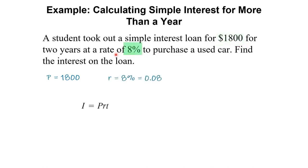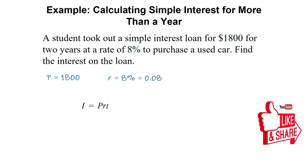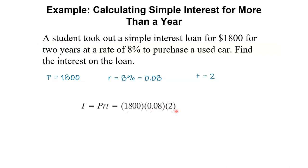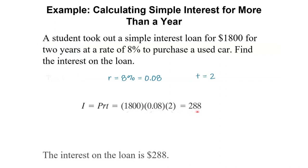The rate of interest is eight percent, which in decimal form is point zero eight. The time is two years. So one thousand eight hundred times point zero eight times two equals two hundred eighty-eight. The interest on the loan for two years is two hundred eighty-eight dollars.